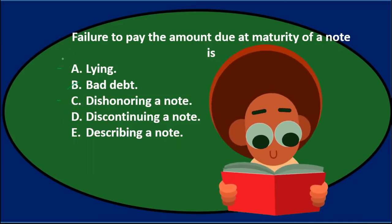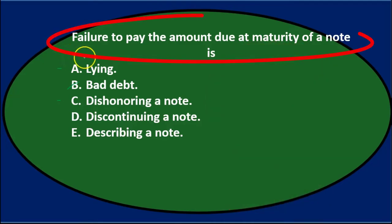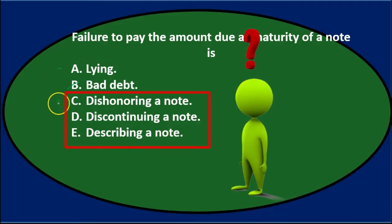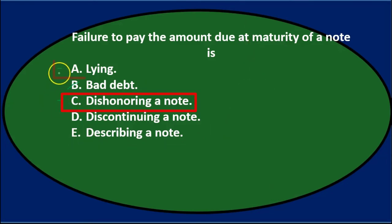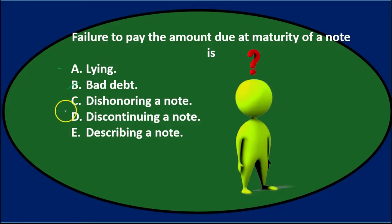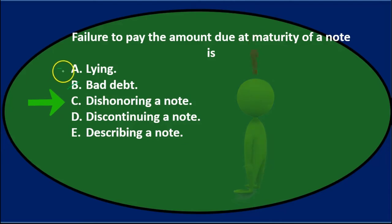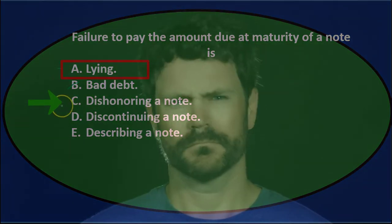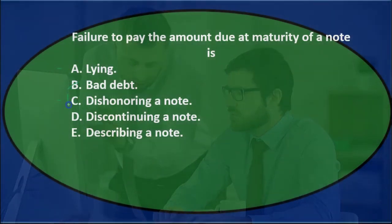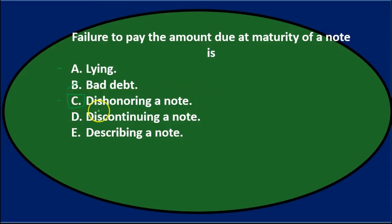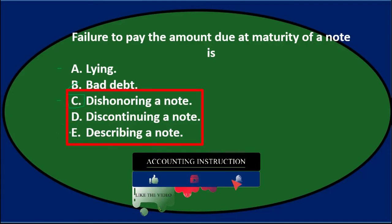Using process of elimination: A says lying, which doesn't sound as technical. C says dishonoring, which is similar to lying but has that same 'D' sound as the other two. D says discontinuing and E says describing a note. Because C sounds similar to A and uses the same type of terminology as the other similar-sounding options, C sounds like the best answer — dishonoring.